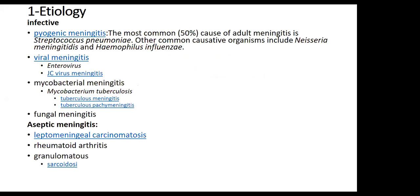Etiology of meningitis: we have infective and aseptic meningitis. Infective meningitis — pyogenic meningitis — the most common cause in adults, 50%, is Streptococcus pneumoniae. Other common causative organisms include Neisseria meningitidis and Haemophilus influenzae. Viral meningitis includes enterovirus, EBV virus, and mycobacterial meningitis. We also have fungal meningitis.